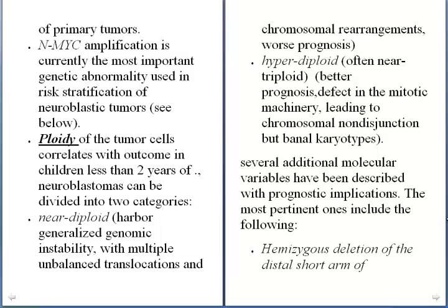MYCN amplification is currently the most important genetic abnormality associated with risk stratification of neuroblastic tumors. Another important factor is the ploidy of tumor cells, which correlates with outcome in children less than two years of age — beyond two years it is not as useful. Neuroblastomas can be divided into near-diploid or hyperdiploid types. Near-diploid tumors have worse prognosis because they harbor generalized genomic instability with multiple unbalanced translocations and chromosomal rearrangements, while hyperdiploid — often near-triploid — tumors have better prognosis due to defects in the mitotic machinery leading to chromosomal non-disjunctions but a more banal karyotype.